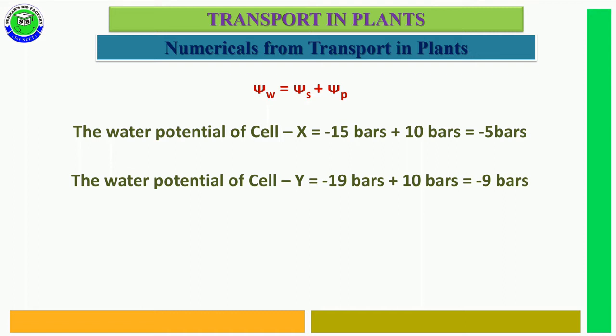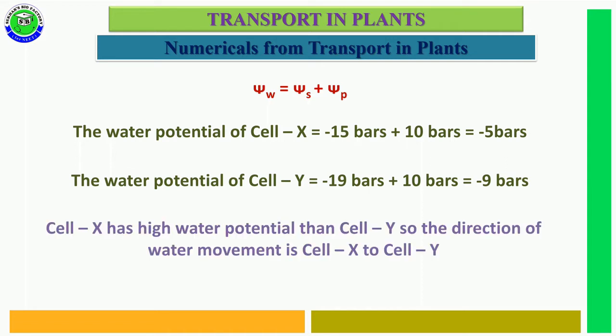When you compare both cells, cell X has higher water potential compared to cell Y, so the direction of water movement is from cell X to cell Y.